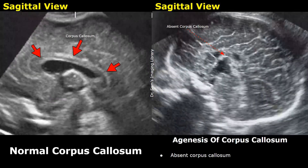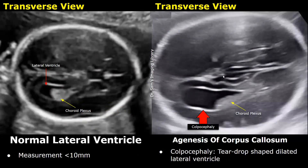This is an image of a normal corpus callosum in sagittal view. The corpus callosum connects the right and left hemispheres of the brain. In agenesis of corpus callosum, the corpus callosum is absent, which can lead to a dilated third ventricle and gives an abnormal appearance. The normal measurement of the lateral ventricle is less than 10 millimeters. A teardrop shaped dilated lateral ventricle — known as colpocephaly — is also a feature of agenesis of corpus callosum.